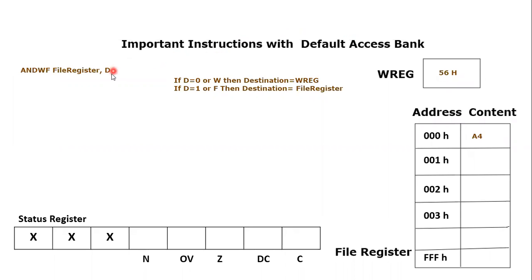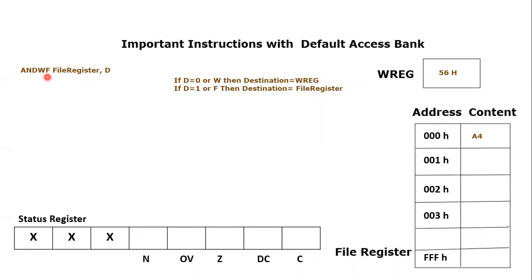In this tutorial we are going to consider another instruction of PIC microcontroller, and the instruction is ANDWF - AND Working File. W stands for working register and F for file register. The syntax is: ANDWF, then the file register, comma, d. The file register is the register we are interested in, and d is the destination bit. This instruction is used to perform the boolean AND operation between the working register and the file register.